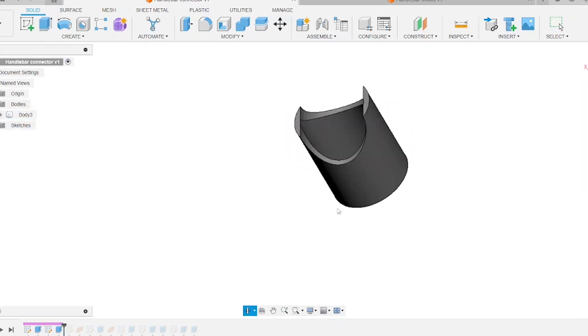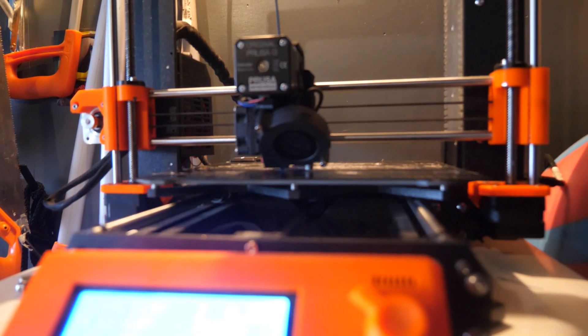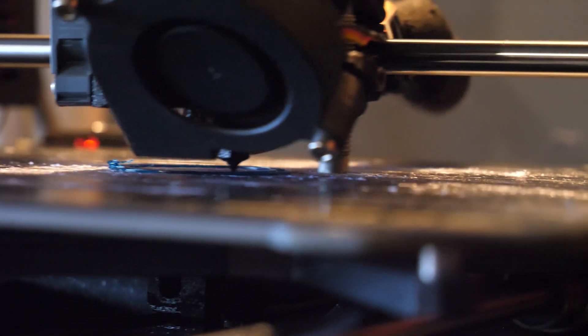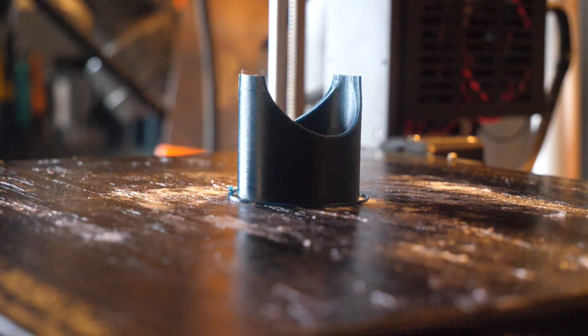So next step is to export this to your slicer, 3D print it and take it off the bed and then you're ready.